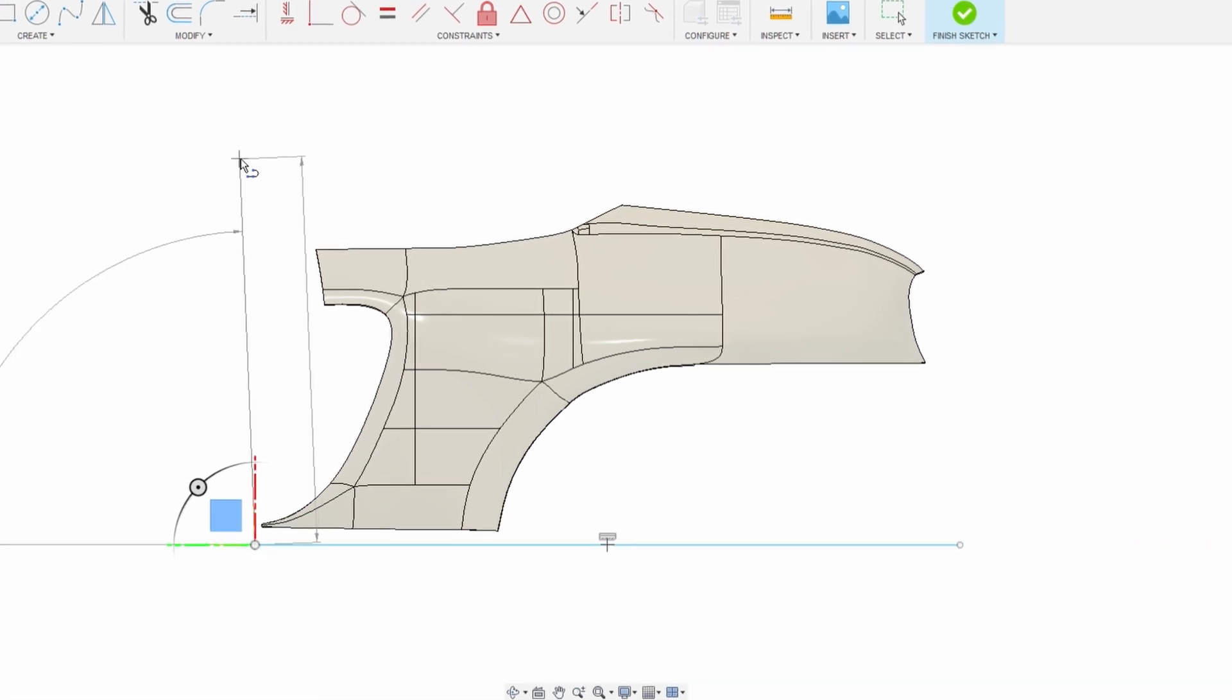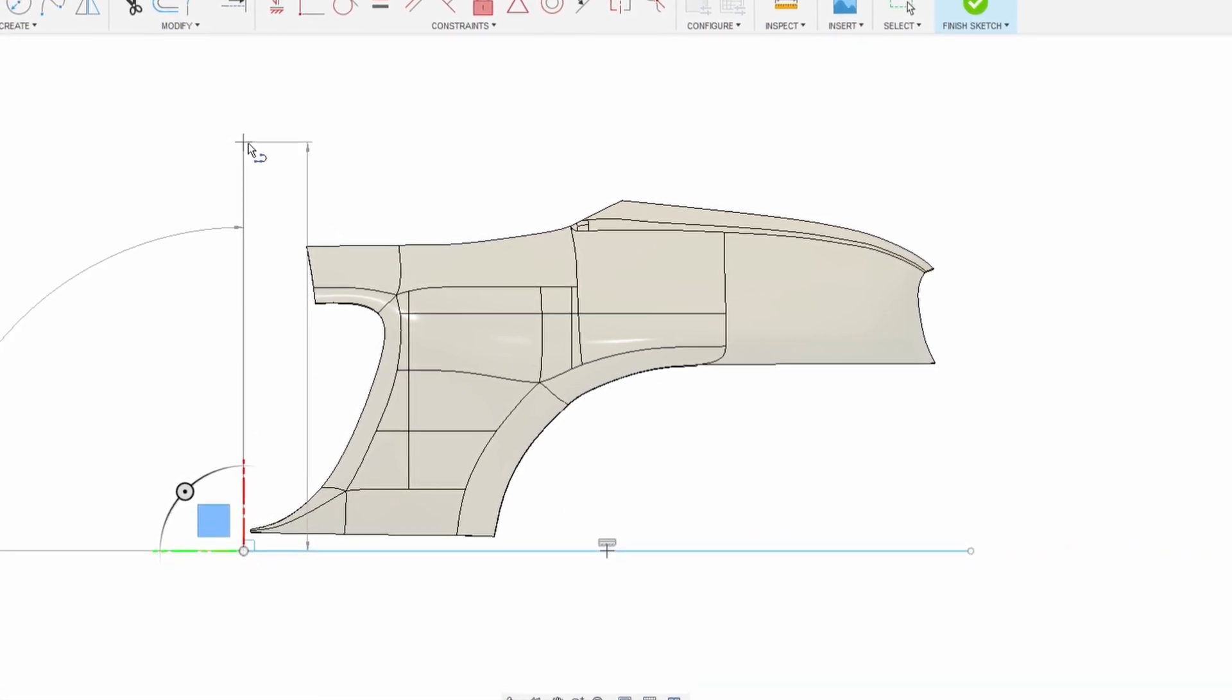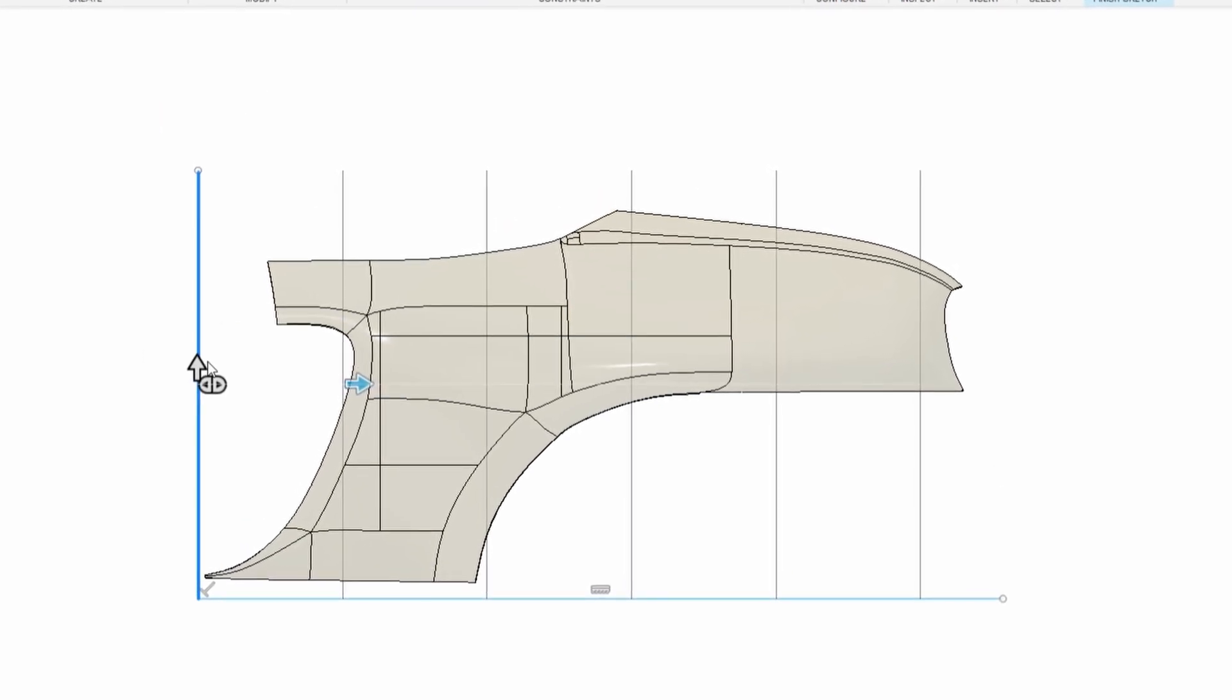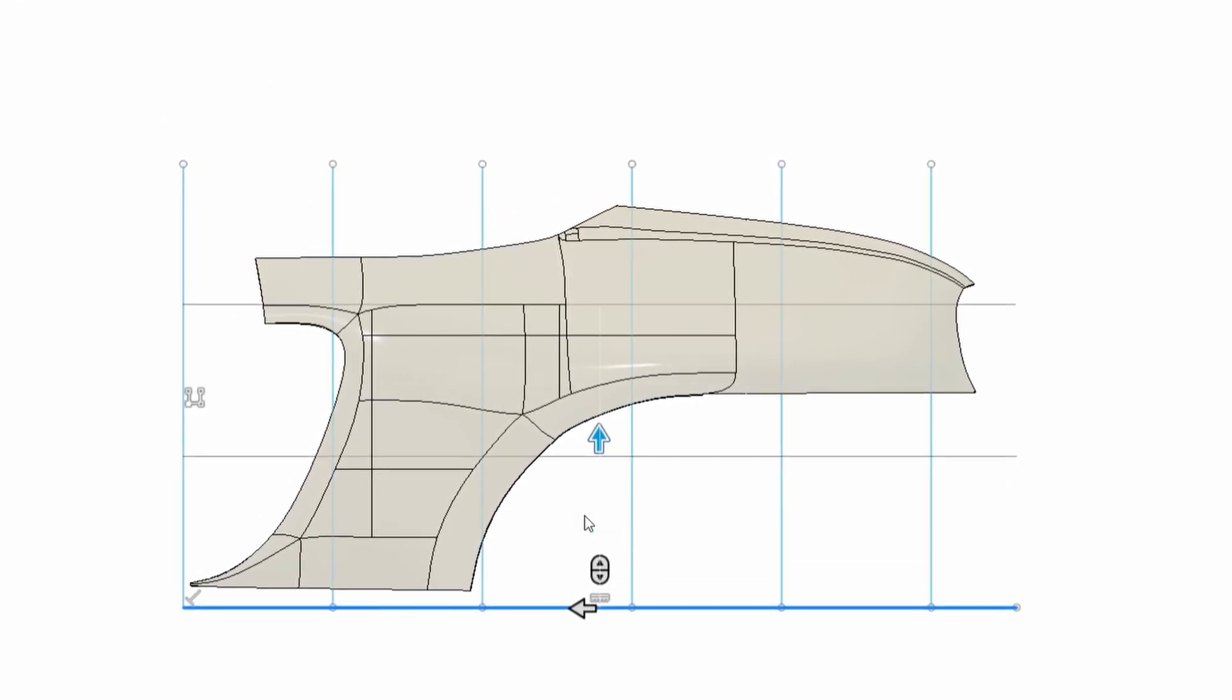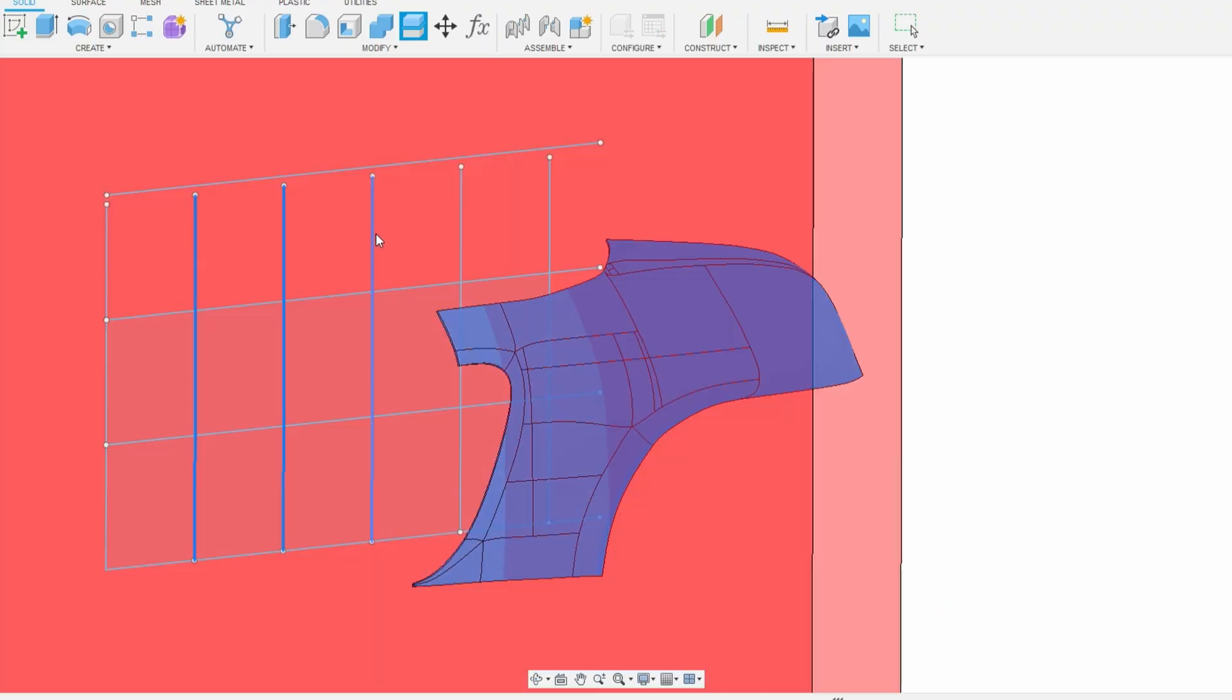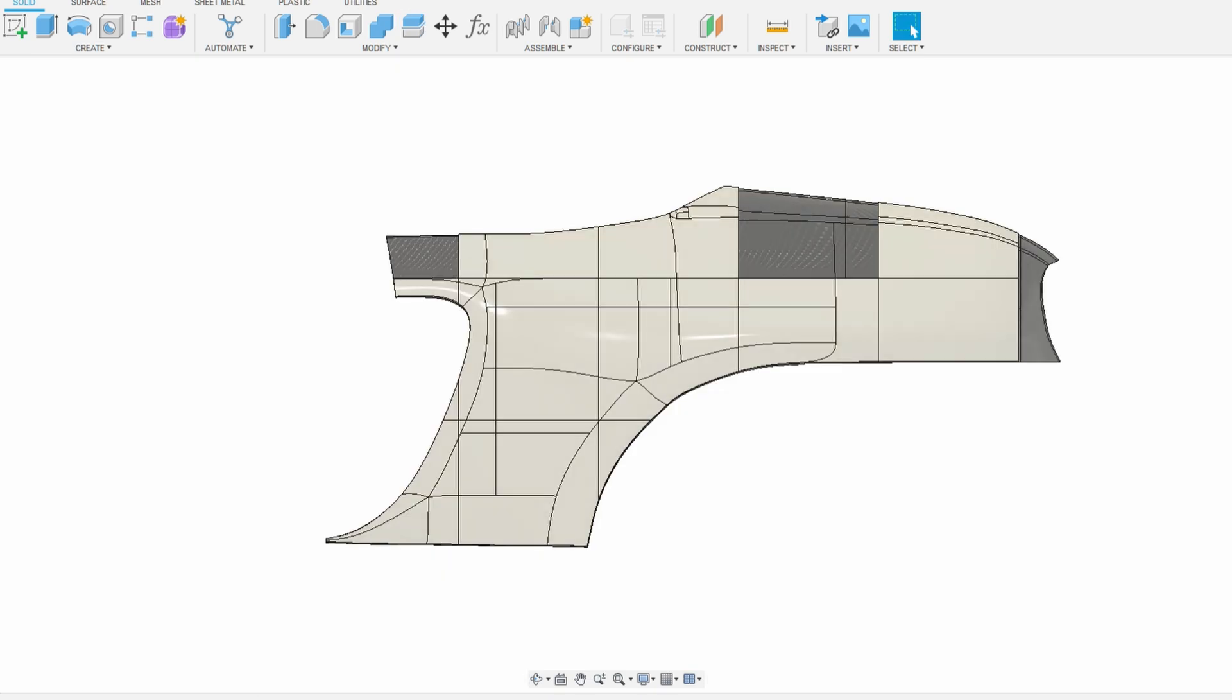To do this in Fusion, I just create a new sketch. Then I draw a line a little longer and another line a little taller than the fender, then do a rectangular pattern with about 220 millimeter spacing so it creates this grid that I could use to split the bodies using the split command. Then I can send them straight to the slicing software.